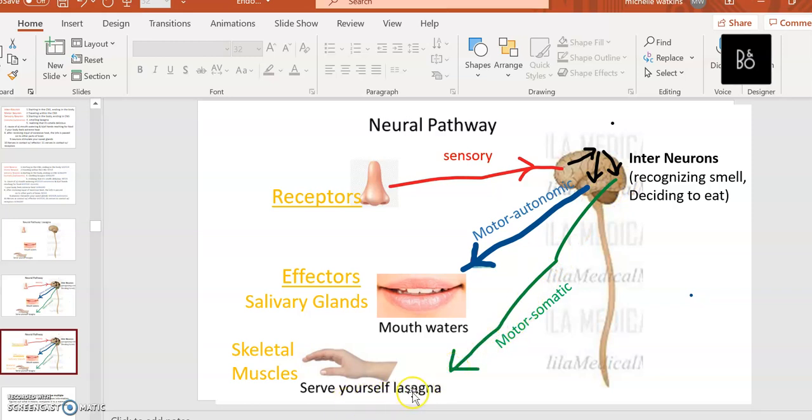As you serve yourself lasagna because you've decided to get yourself a piece, these interneurons have processed the smell and decided to get a piece. So there's two neural pathways. Notice that the effectors of this motor nerve are salivary glands and are involuntary. The effectors of this motor nerve are skeletal muscles or muscles that you control.